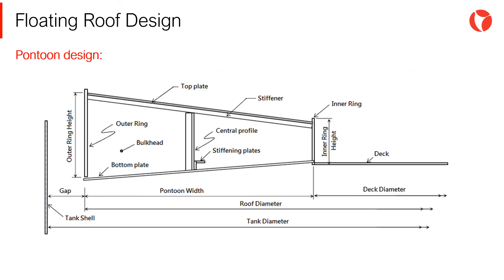The pontoon is the element that provides buoyancy to the floating roof. It is a box formed mainly of five plates: a top plate, a bottom plate, two rings — inner and outer — and a series of radial brackets. The dimensions of the pontoon, width and height, vary depending on the buoyancy requirements and the tank dimensions.